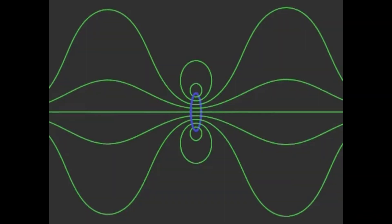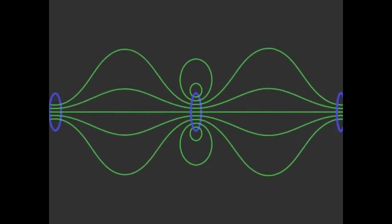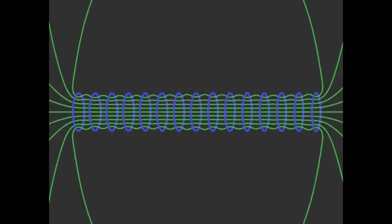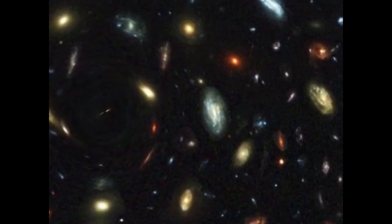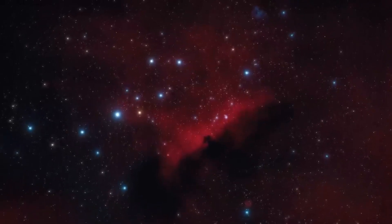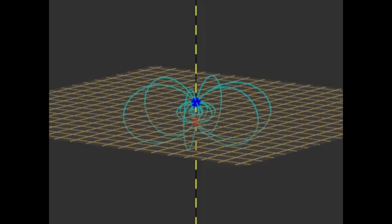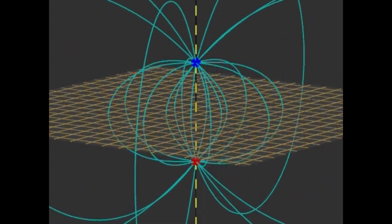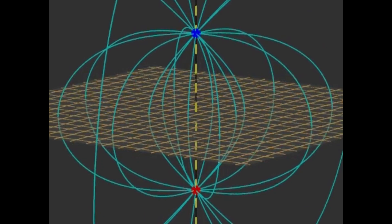But what if I told you there is something more fundamental, something that fuels every corner of space, that controls the motion of particles and shaping of galaxies. It's not particle, it's not even matter. It's something deeper. It's something called a field. And understanding fields may be the key to unlock the deepest secrets of reality itself.